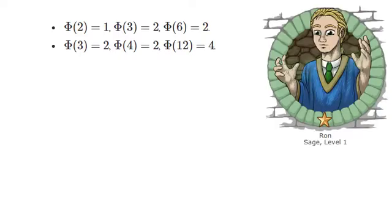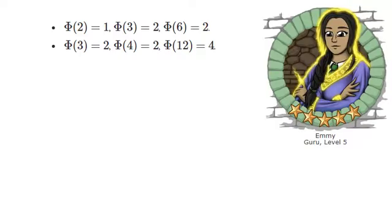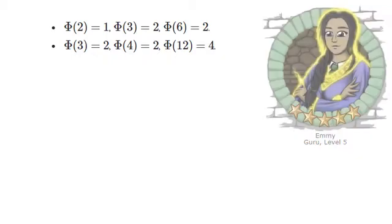We need more examples. It's something to do with multiplication. Here's another one. Phi of 3 equals 2, phi of 5 equals 4, and phi of 15 equals 8.